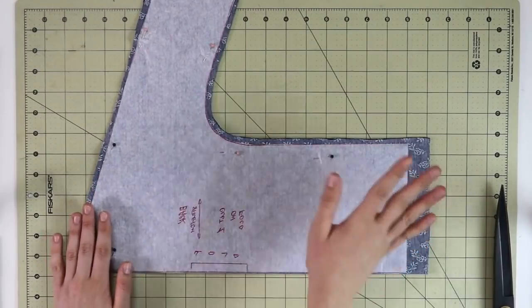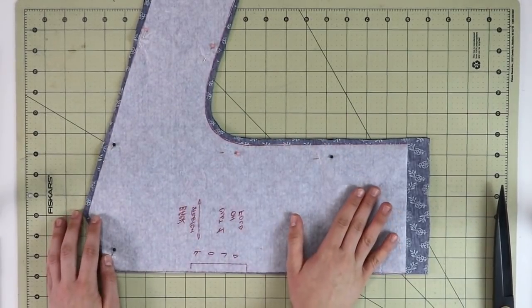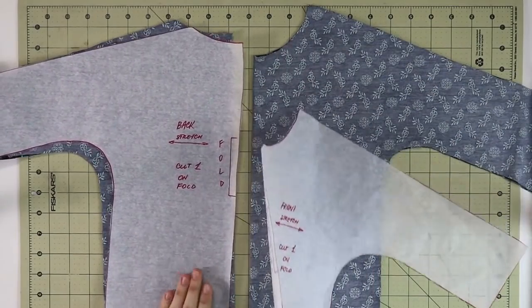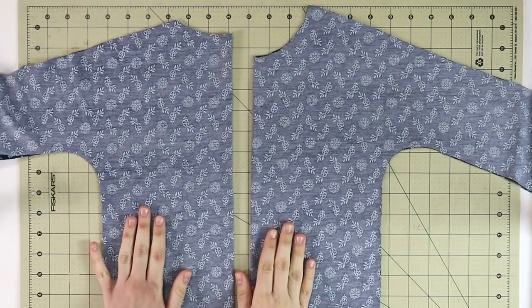Once this is done for one of the pattern pieces, you're going to repeat exactly the same steps for the other pattern piece as well. Once both of the pattern pieces have been cut, it's time to assemble them.